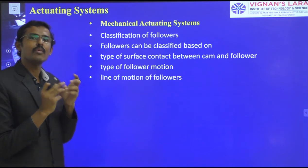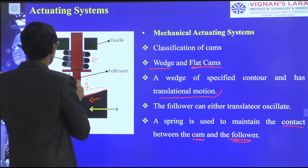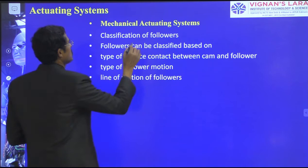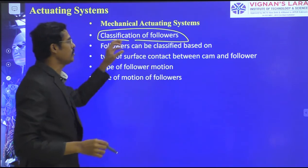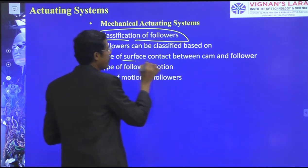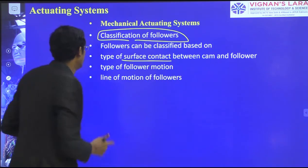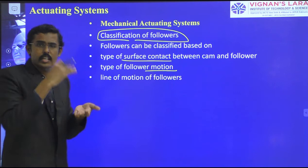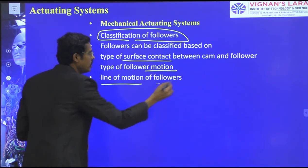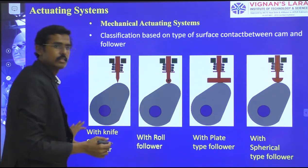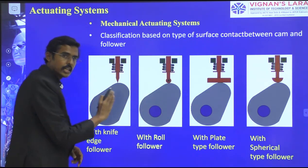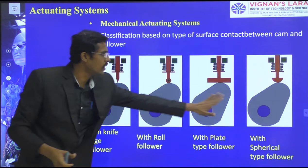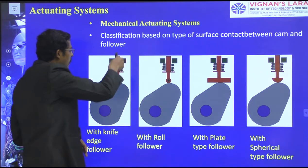Now I am changing the follower type. Classifications of followers: followers can be classified based on the type of surface contact, and based on types of follower motion — reciprocating motion, oscillating motion. We have an oscillating follower and a reciprocating follower. I have not changed the CAM — all CAMs remain the same here. I am only changing the follower type.